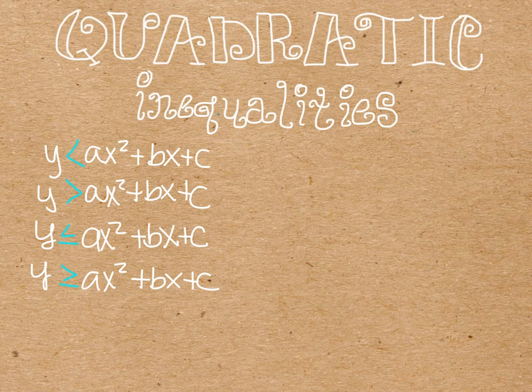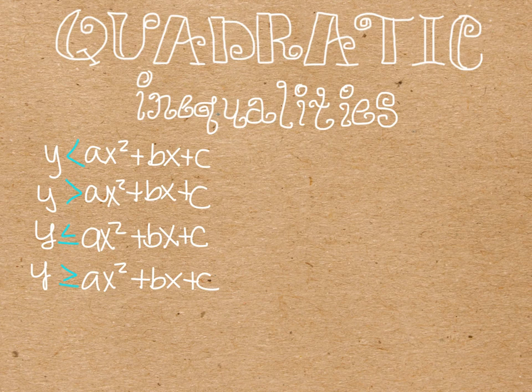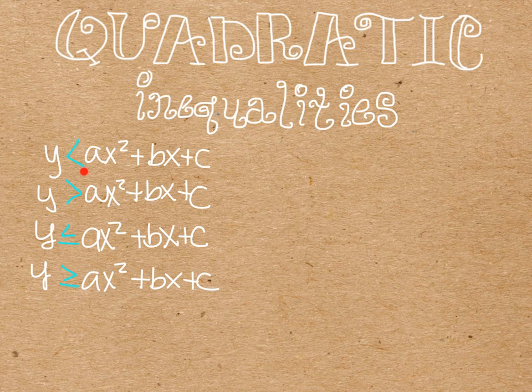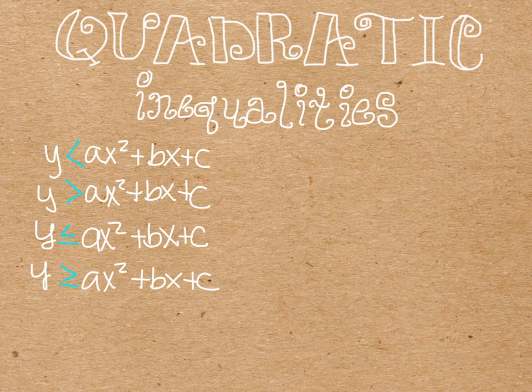We're going to start by talking about graphing them, and we can have our graphs in four different setups here. We could have y is less than ax squared plus bx plus c, that's just a standard quadratic. We could have y is greater than, y is less than or equal to, or y is greater than or equal to.